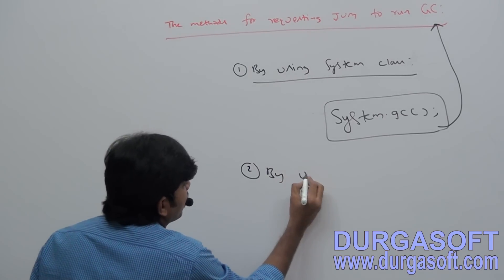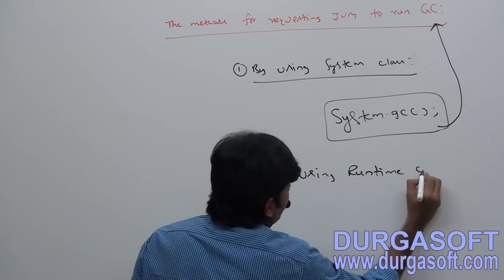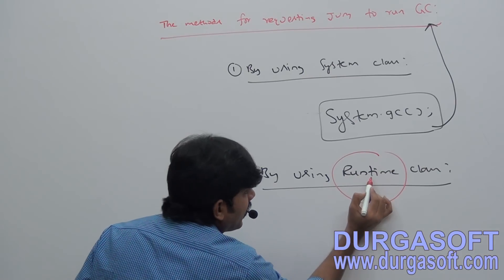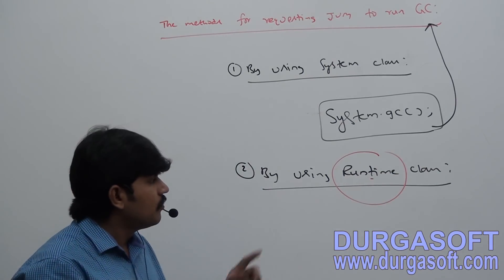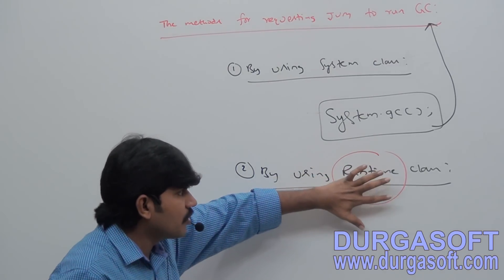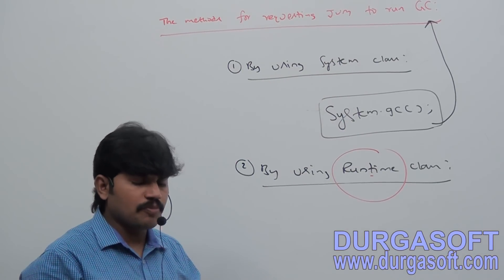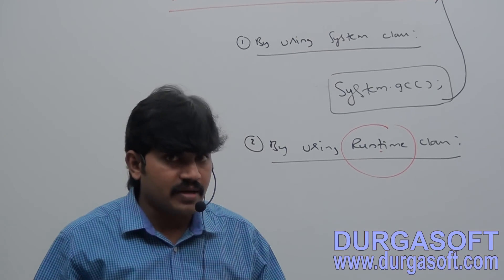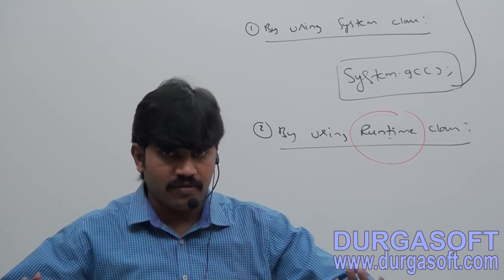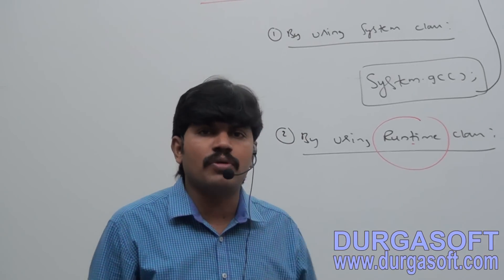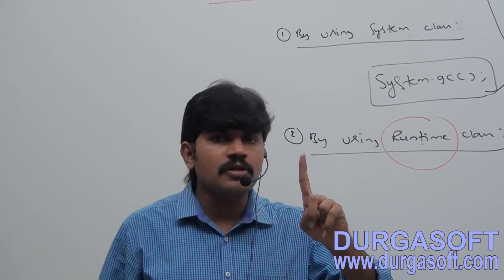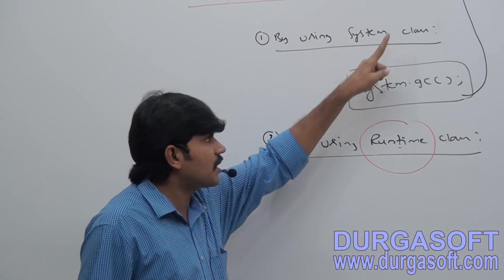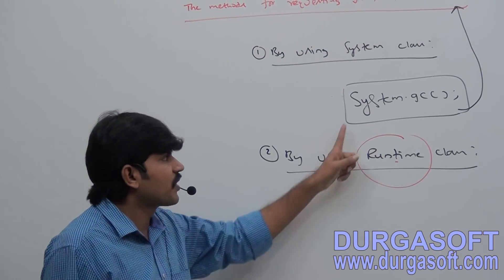The second way is by using the Runtime class — note that the 't' in Runtime is lowercase. There are two ways for requesting JVM to run garbage collector: first by using System class, and second by using Runtime class. System class contains a static method GC. By using System.gc(), we can request JVM to run garbage collector.